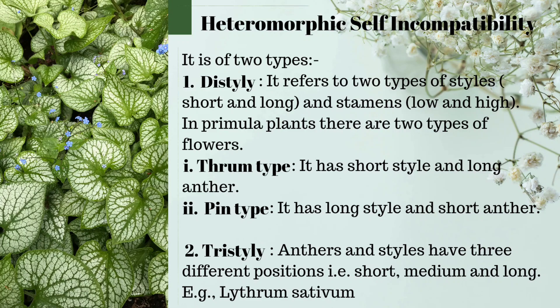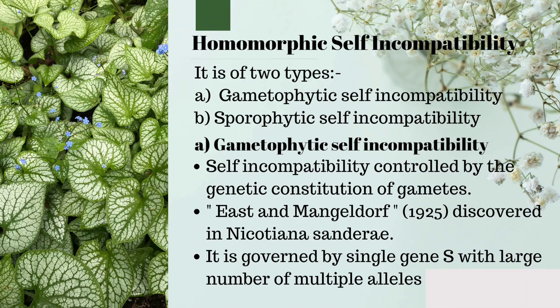In tristyle, anthers and style have three different positions: short, medium, and long. An example is Lathyrus sativum. Homomorphic self-incompatibility is of two types: gametophytic and sporophytic.